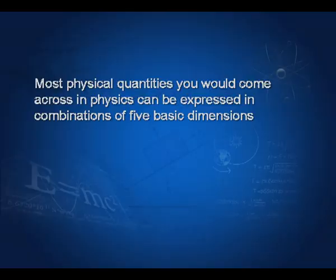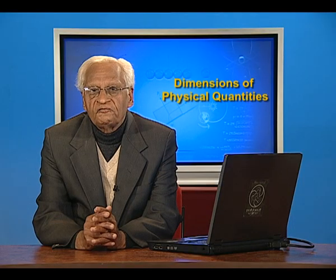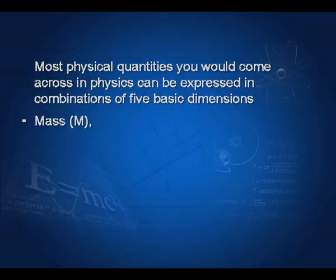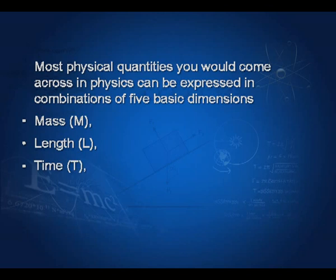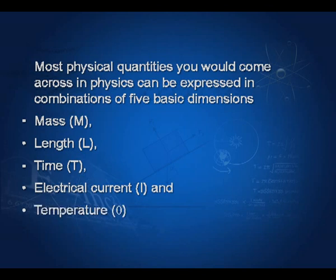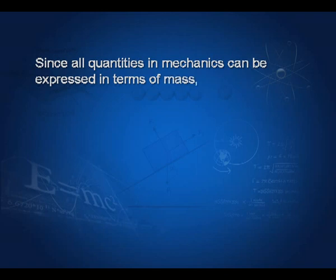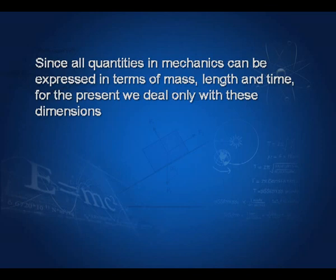Most physical quantities you would come across in physics can be expressed in combinations of five basic dimensions: mass, denoted by capital M; length, denoted by capital L; time, denoted by capital T; electrical current, denoted by capital I; and temperature, denoted by the Greek letter theta. Since all quantities in mechanics can be expressed in terms of mass, length, and time, for the present we deal only with these dimensions.